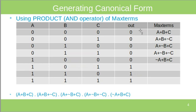Here we get five maxterms. For a row where input A is zero, we take A as it is; where the value is one, we take the complement — for example, NOT C (tilde C). In this way we construct the maxterms, and finally we take the product of all these maxterms. This is the canonical form of this truth table.